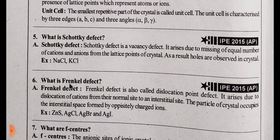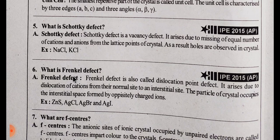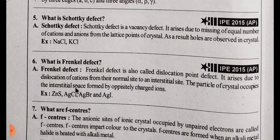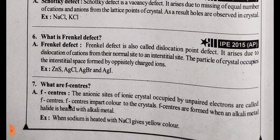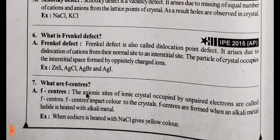What is the Frenkel defect? The Frenkel defect occurs when the size of the anion and cation is different. Examples include silver compounds — silver chloride, silver bromide, silver iodide, zinc sulfide. If a cation is missing from its lattice site and moves to an interstitial site, that is the Frenkel defect.